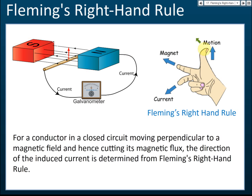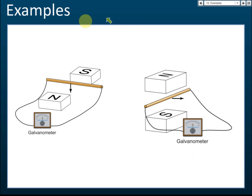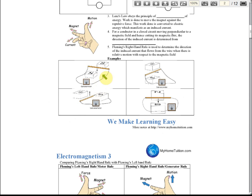In this example, we can see that the rod is moving up. So the motion is going upward. The magnetic field goes from north to south, so the index finger points from north to south. Therefore the current is coming out — moving out of the plane. The current comes out here and then goes to the galvanometer and flows back to the conductor. That's how we use Fleming's right hand rule to determine the direction of the current.